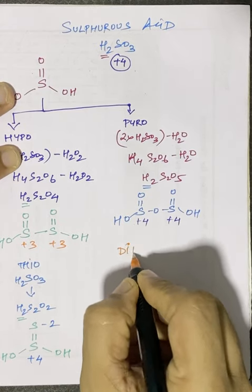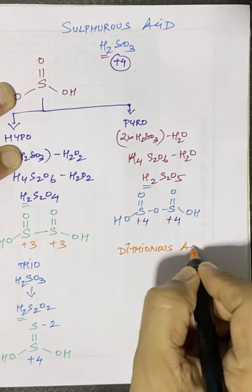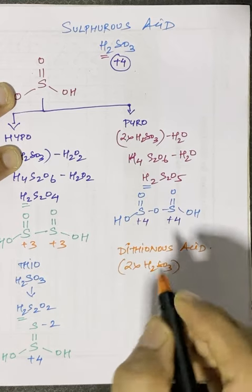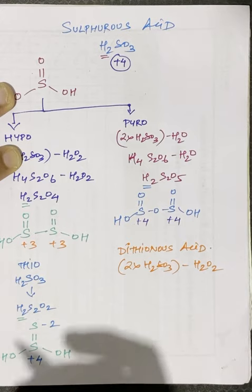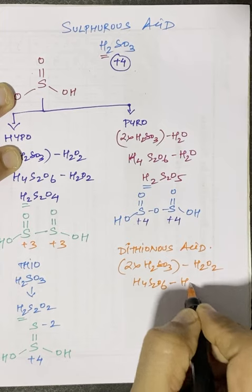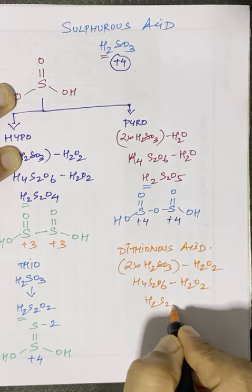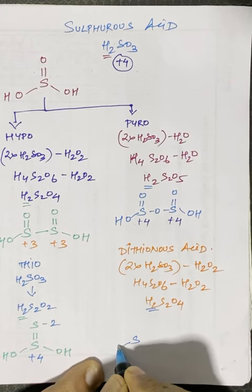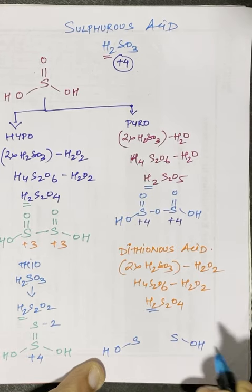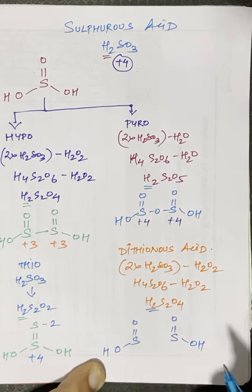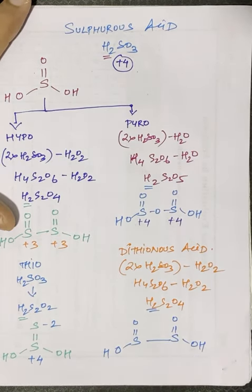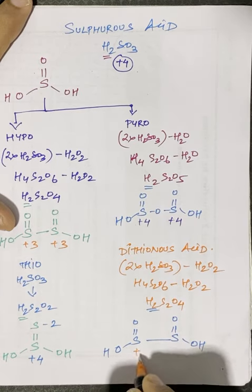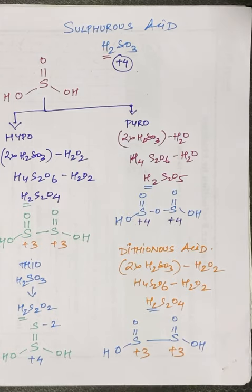The last compound in this group is dithionous acid. Using the hypo formula: 2×H₂SO₃ − H₂O₂ = H₄S₂O₆ − H₂O₂ = H₂S₂O₄. There are two H, so two OH bonds. The structure is HO–S(=O)–S(=O)–OH with a direct S–S bond. The S–S bond oxidation state is zero, so each sulfur has two oxygens and one OH, making each sulfur +3. This concludes the sulfurous acid family: hyposulfurous, pyrosulfurous, thiosulfurous, and dithionous acid.